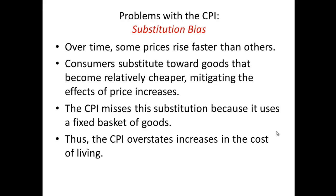The first problem with CPI is something called the substitution bias. The Consumer Price Index measures the goods and services that a typical consumer or typical household would purchase within a given time frame, generally a year. Unlike GDP, where household spending covers all domestic products and imports are included under net exports, with CPI we look at everything a typical household would purchase.